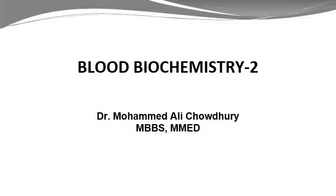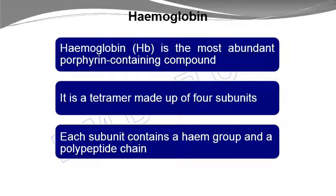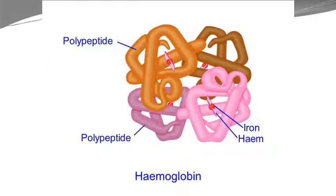From the previous lecture, hemoglobin is the most abundant porphyrin-containing compound. It is made up of four subunits, giving it a tetrameric structure. Each of these subunits has a heme group attached to iron, as well as a polypeptide chain. In this diagram you can see the four subunits with the heme group in the center attached to the iron.